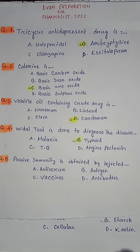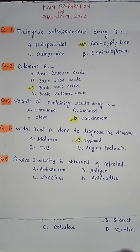Question number two: calamine is — option A basic carbon oxide, option B basic iron oxide, option C basic zinc oxide, option D basic sulfur oxide. So correct answer is option C basic zinc oxide.